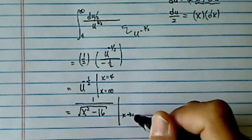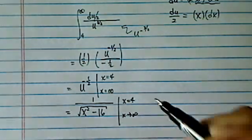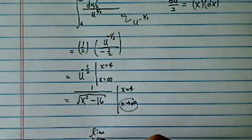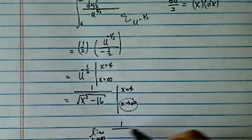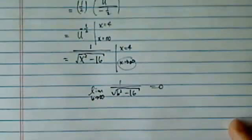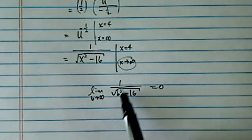Now the interesting thing here is that with the infinity part, limit as b approached infinity, 1 over square root of b squared minus 16, this one goes to 0. It's pretty easy to see because b gets bigger and bigger, minus 16, it's on the denominator, so this whole thing equals 0.